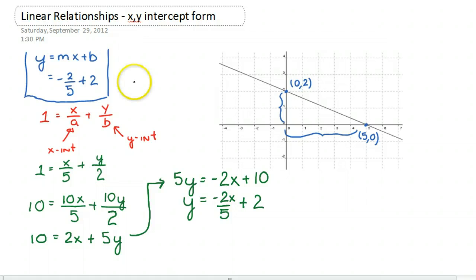And sure enough, the y equals mx plus b form matches the y equals mx plus b form I get when converting xy-intercept form.